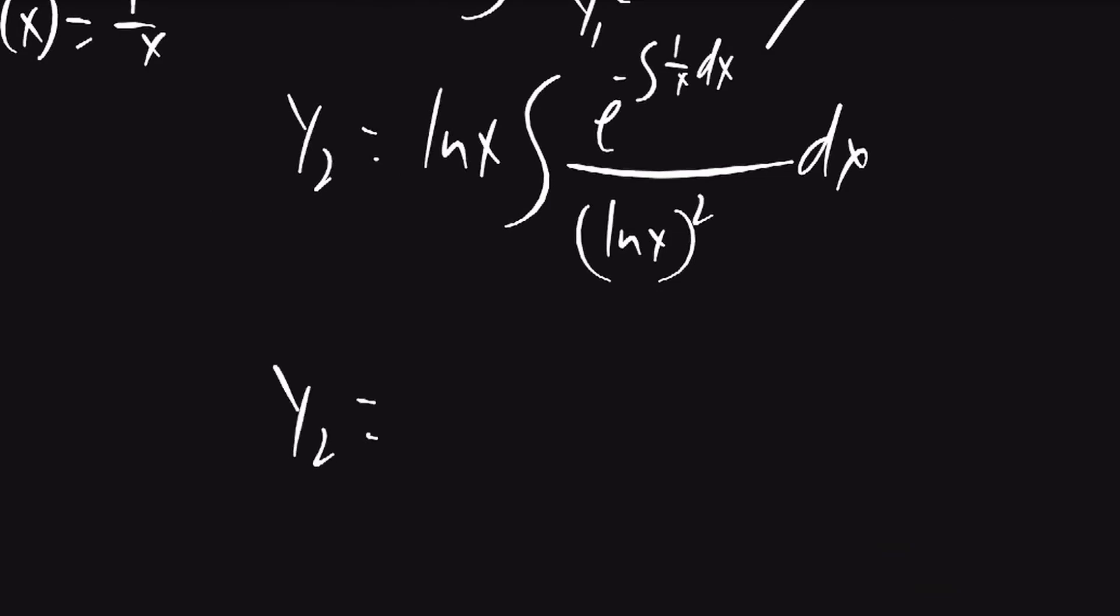I'll write that into this equation. y2 will be equal to lnx times the integral of 1 over x times 1 over lnx squared.